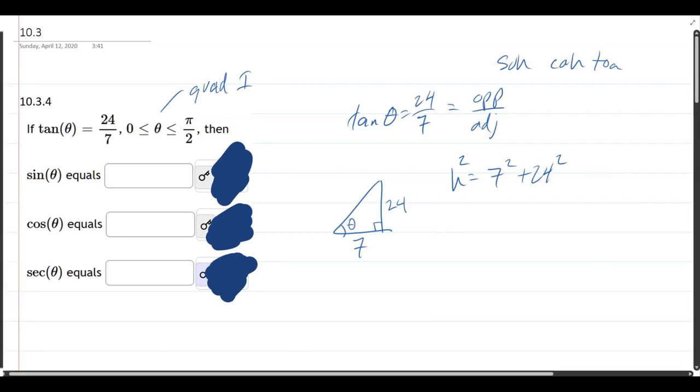Now, sine is the first one we want to get. Sine is opposite over hypotenuse. So opposite is 24. Hypotenuse is now this hypotenuse squared. It's the square root of that.